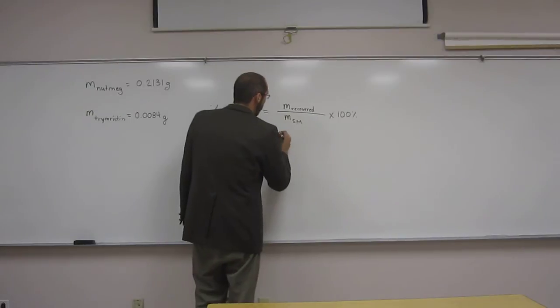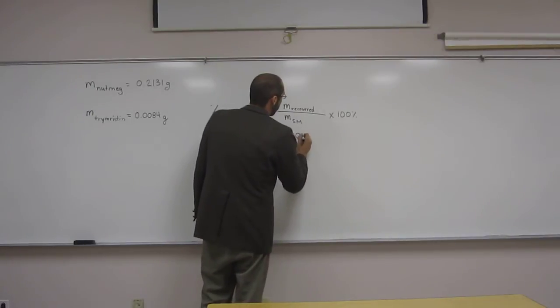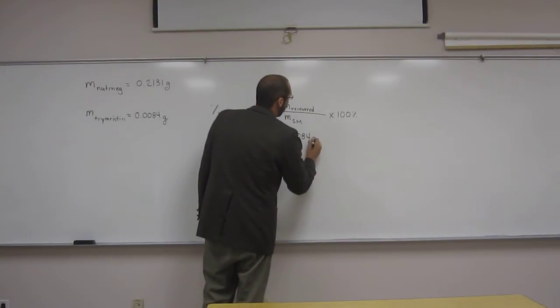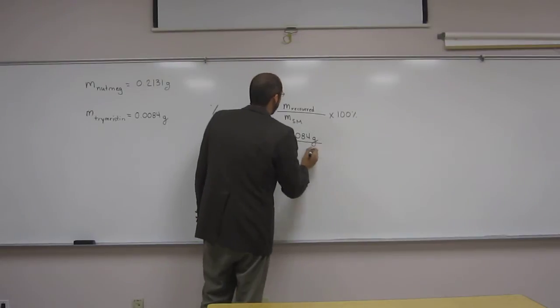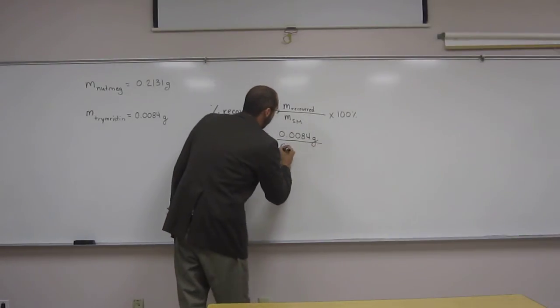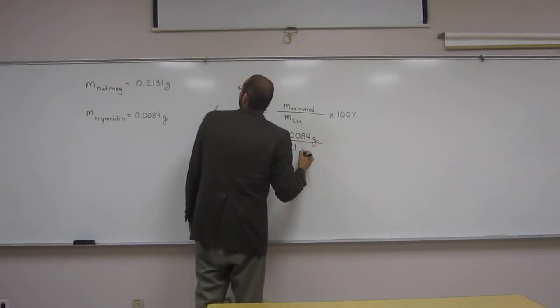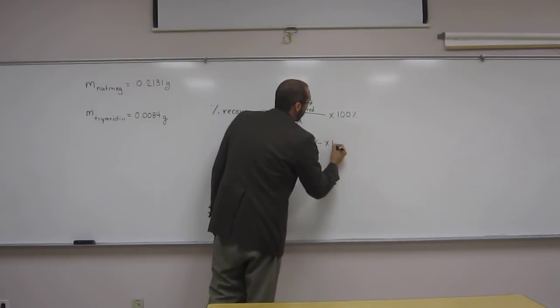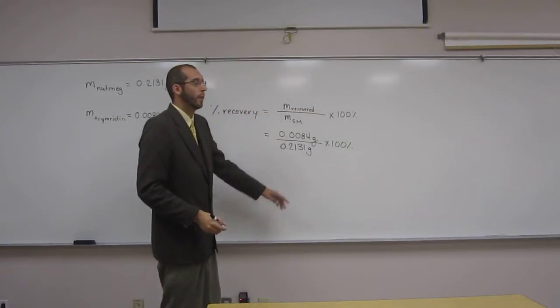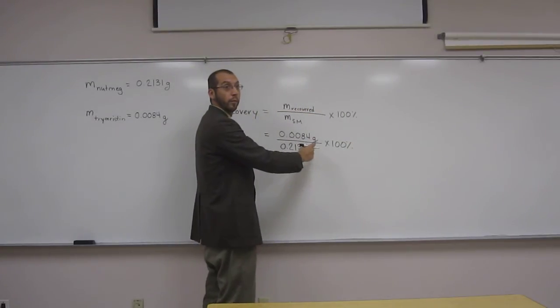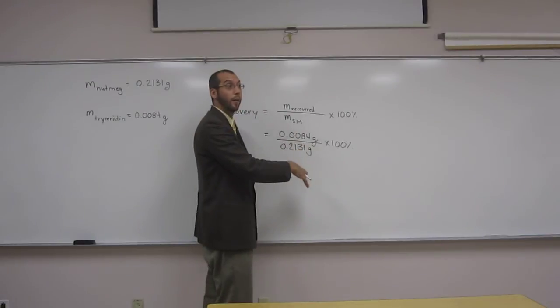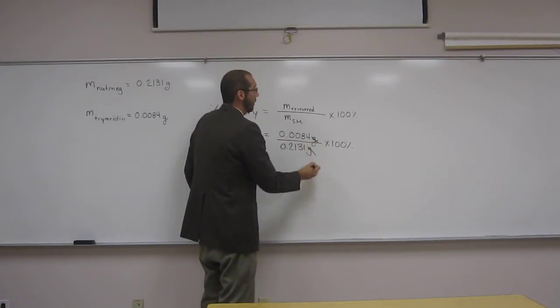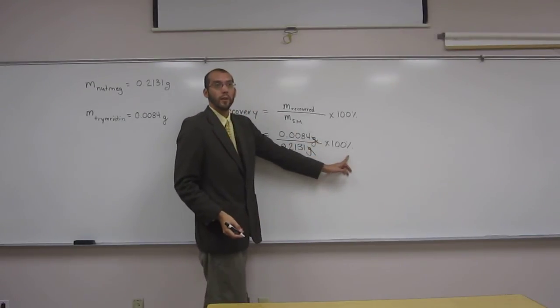So anyways, the mass recovered was 0.0084 grams divided by the mass of nutmeg, 0.2131 grams. Multiply that by 100%. And hopefully you notice, we've got grams divided by grams there, right? So that's going to cancel out grams, okay? So our units are going to be percentage units.